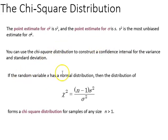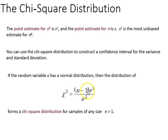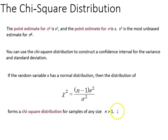If a variable has a normal distribution, then the distribution of chi-square will equal n minus 1 — so the sample size minus 1 — times s-squared, the sample variance, divided by the population variance. It will form a chi-square distribution for samples of any size greater than 1.